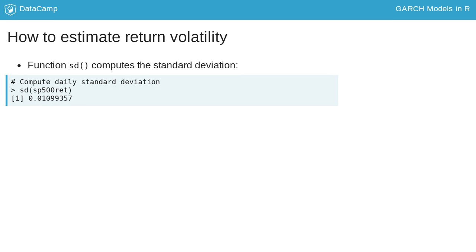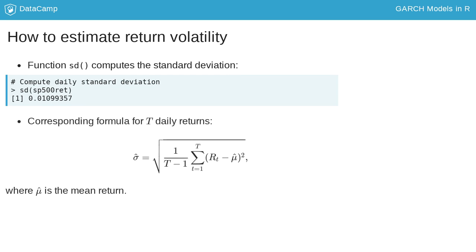You can estimate the return standard deviation in R by applying the function sd to the return series. For the daily S&P 500 returns this gives you a daily volatility of around 1%.